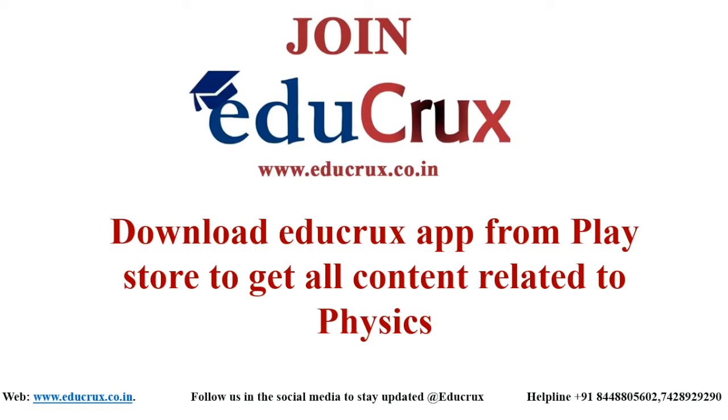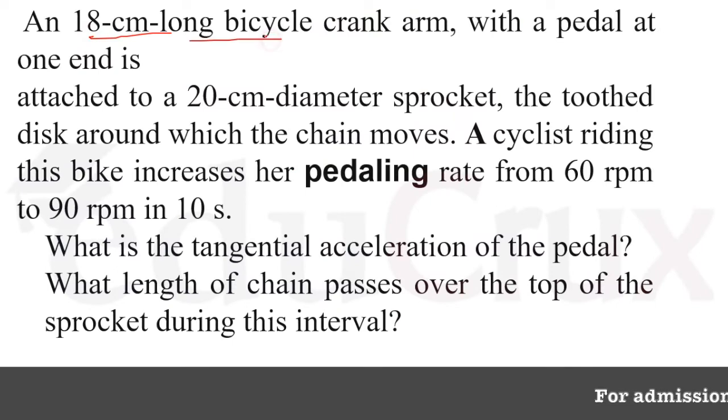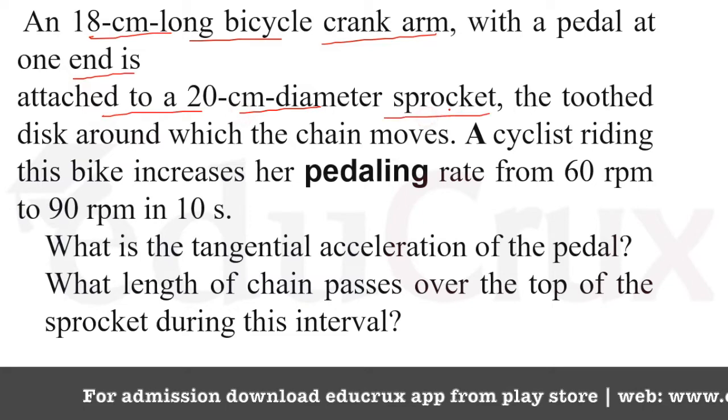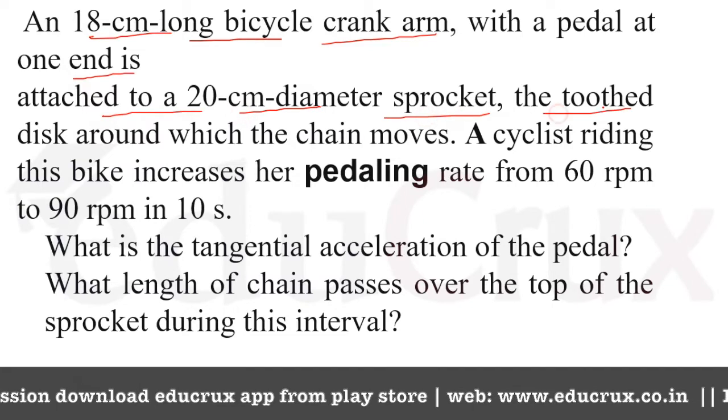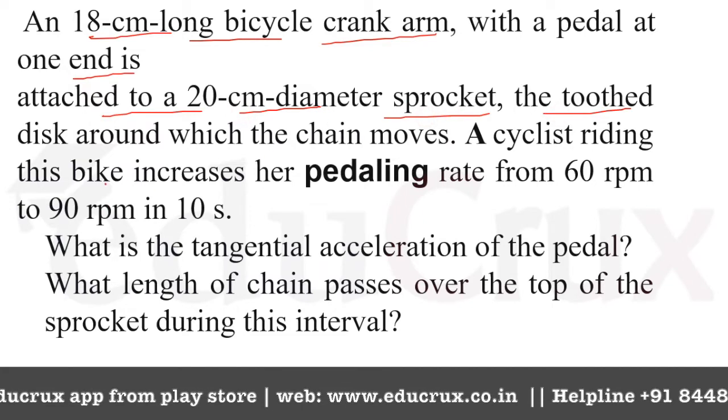Our question says that an 18 cm long bicycle crank come to the pedal at one end is attached to a 20 cm diameter sprocket. The tooth and what is a sprocket? The tooth disc around which the chain moves.